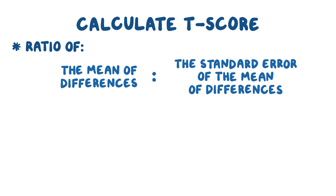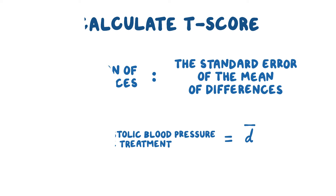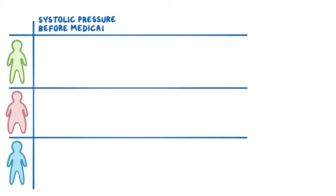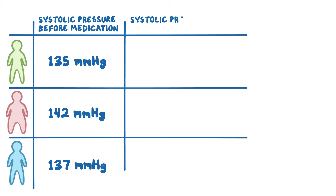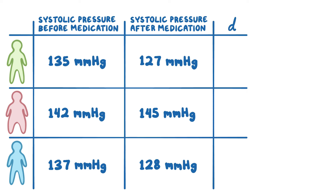Let's start with the first part: the mean of the differences between the two groups. In our case, that's the difference in systolic blood pressure in individuals before and after the treatment, represented by the symbol D-bar. For example, let's calculate the mean of the differences for the first three people. Their systolic blood pressures before the medication were 135, 142, and 137 mmHg, and after the medication they were 127, 145, and 128 mmHg. For person 1, the difference is 127 minus 135, or minus 8.